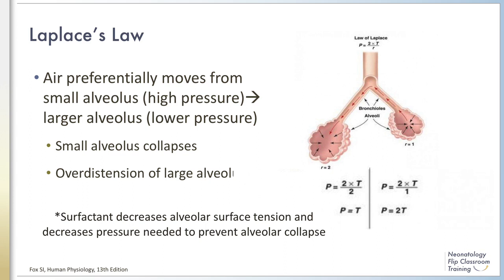We can also understand the critical role of surfactant in decreasing alveolar surface tension. The pressure required to prevent alveolar collapse is directly proportional to the surface tension and indirectly proportional to alveolar radius. As per the calculation above, the smaller alveolus requires twice the amount of pressure of the larger alveolus to prevent collapse. As a result of this pressure gradient, air will be displaced from the small alveolus — which is under greater pressure — moving over to the larger alveolus, until the smaller alveolus collapses and the large alveolus becomes overdistended.